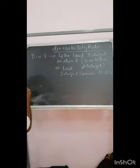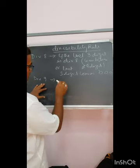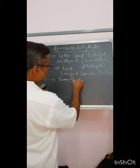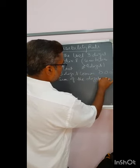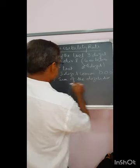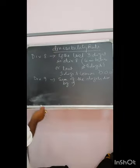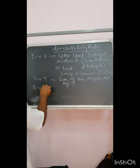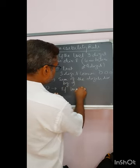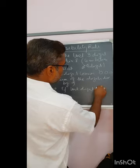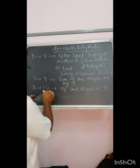Next comes divisibility by nine, where the rule is similar to three: if the sum of the digits is divisible by nine, then the number is divisible by nine. And divisibility by ten is very easy — if the last digit is zero, then only the number is divisible by ten.